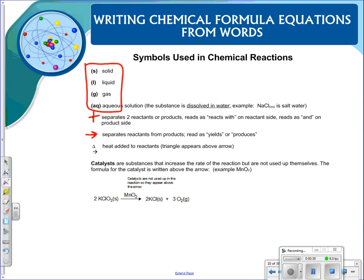If you see an arrow, this is going to separate your reactants from your products. It's very important. You read these as yield or produces. If you see that there is a triangle above the arrow, that means that heat has been added to your reactants.